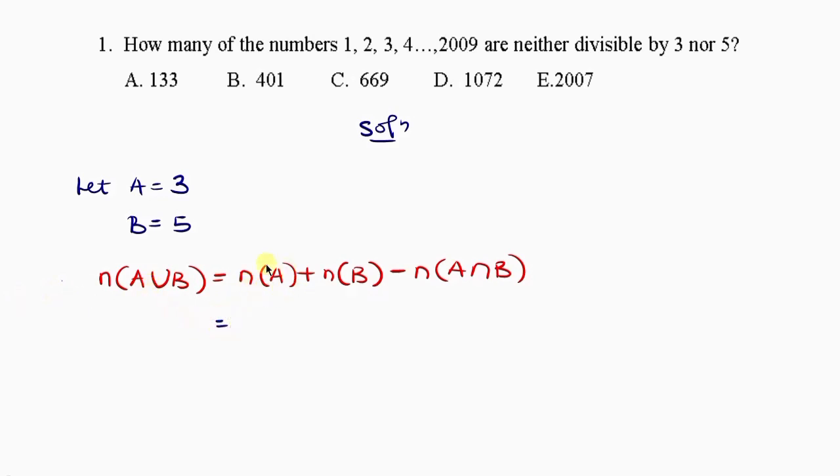The cardinality of A means we're going to take the last item which is 2009 and divide it by A. What is our A? 3.